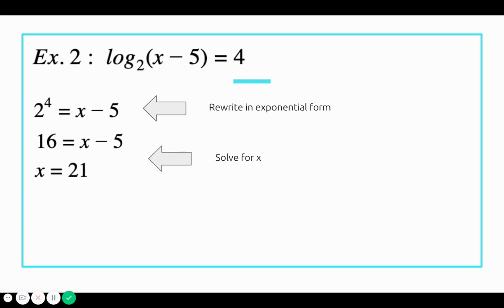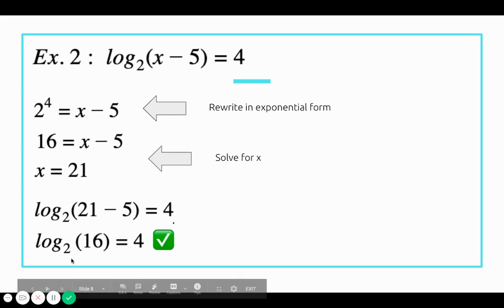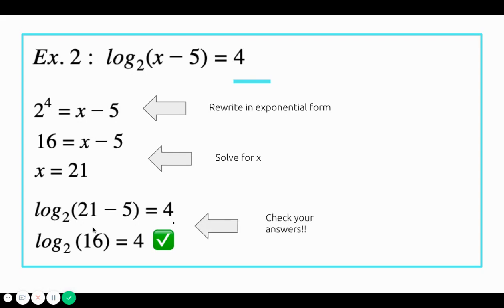Again, it's super important for us to check our answers. We plug 21 back into the original problem: log base 2 of 21 minus 5 equals 4. We simplify to get log base 2 of 16 equals 4, which is correct because 2 to the 4th power equals 16. Don't forget to check your answers for log examples.